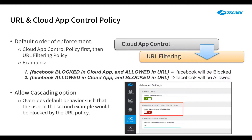This behavior changes, however, if you allow Cascading to URL Filtering. If you do, the service applies the URL Filtering Policy even if it applies a Cloud App Control Policy allowing the transaction. Therefore, in the example just provided but with Cascading enabled, the service will apply the URL Filtering Policy and block the user from Facebook.